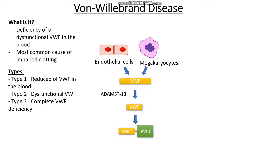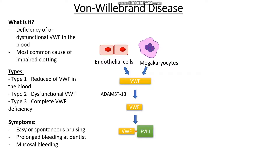If we don't have von Willebrand factor, we can't form the initial platelet plug because von Willebrand factor is what initially binds to the exposed collagen. So we're going to see symptoms of easy or spontaneous bruising, prolonged bleeding at the dentist or during dental extractions, bleeding from the gums when brushing teeth, mucosal bleeding, nosebleeds, and in women, quite heavy periods and menorrhoea.